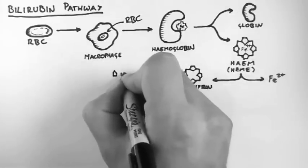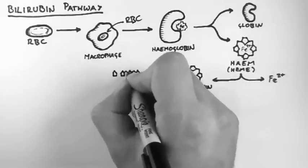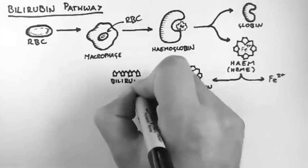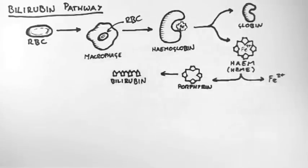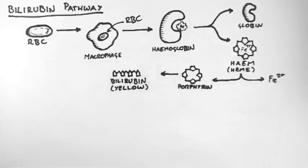Now through a couple of steps which I haven't shown here, this porphyrin ring is opened up and this molecule is bilirubin. It is a bright yellow molecule, hence why excess causes yellow skin pigmentation in jaundice.